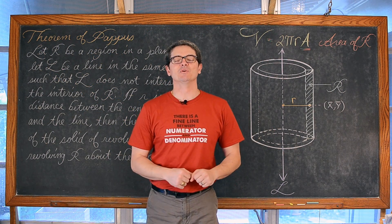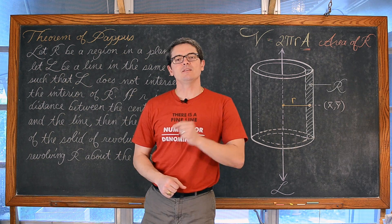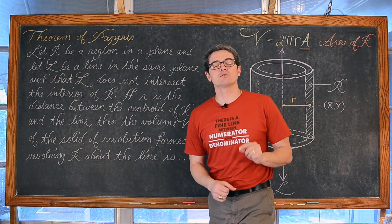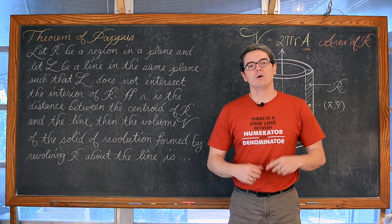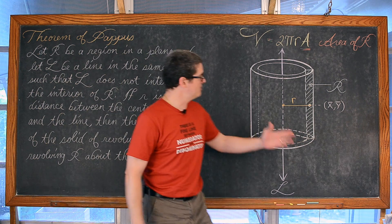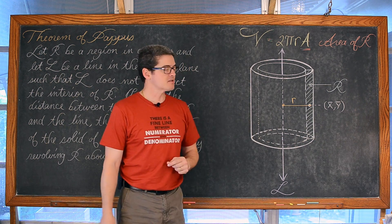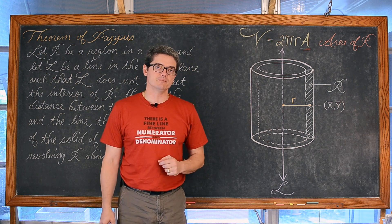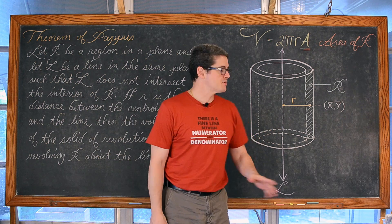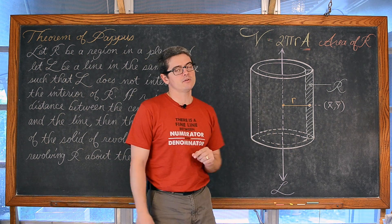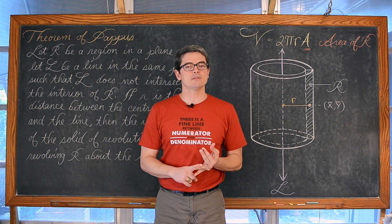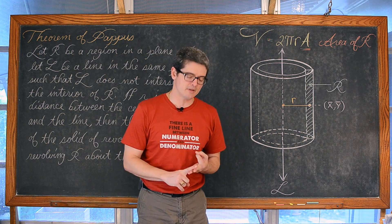BAM! Mr. Tarrou. In this lesson we are going to learn an alternative way of finding the volume of a solid of revolution. This is going to complement what we already know, which is finding these volumes using the disk method, the washer method, and the shell method.